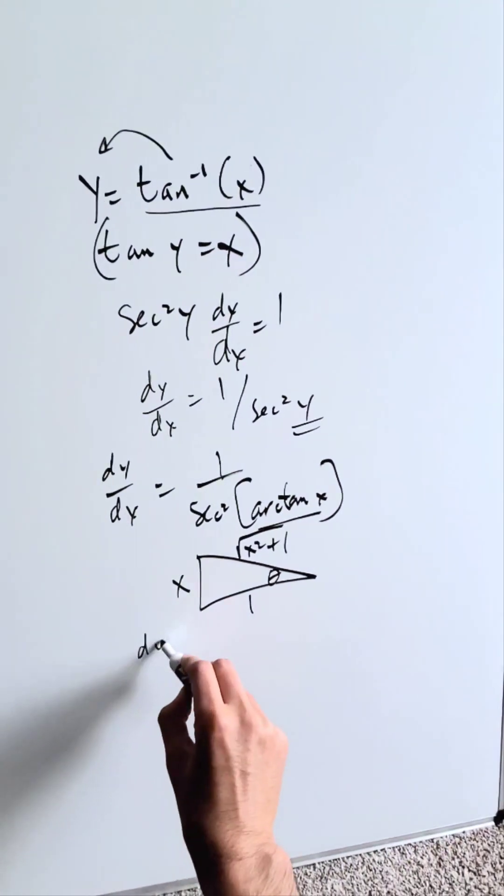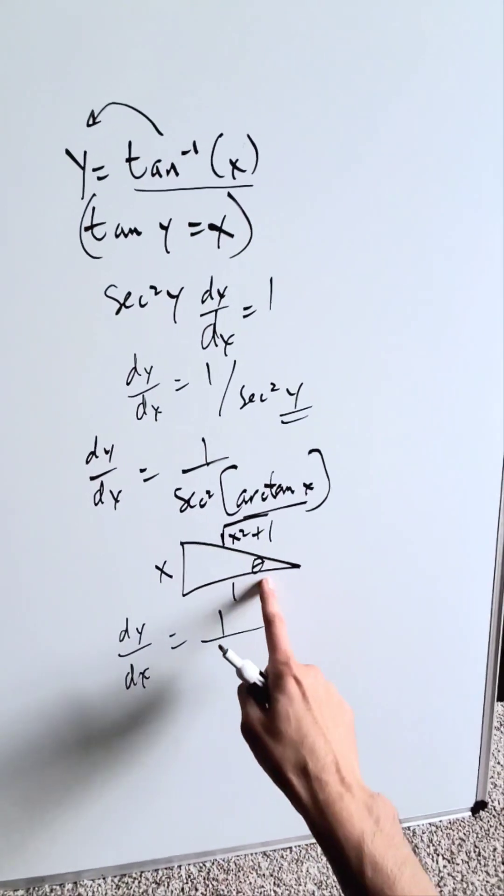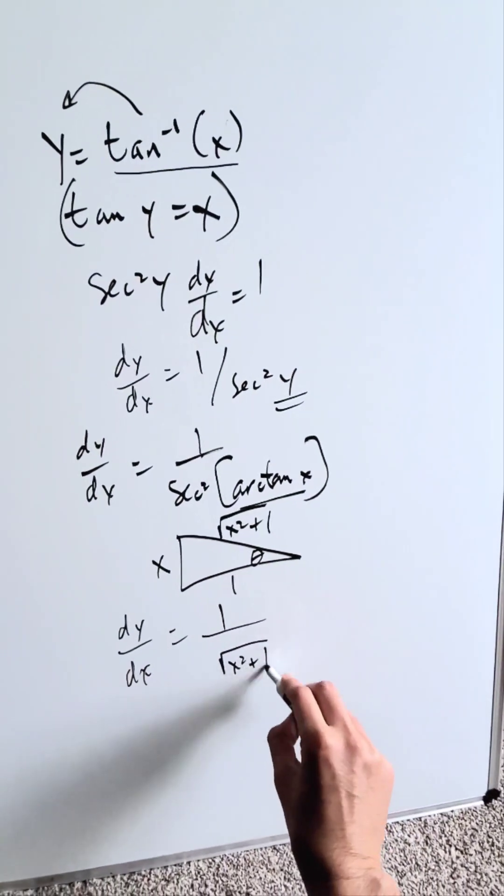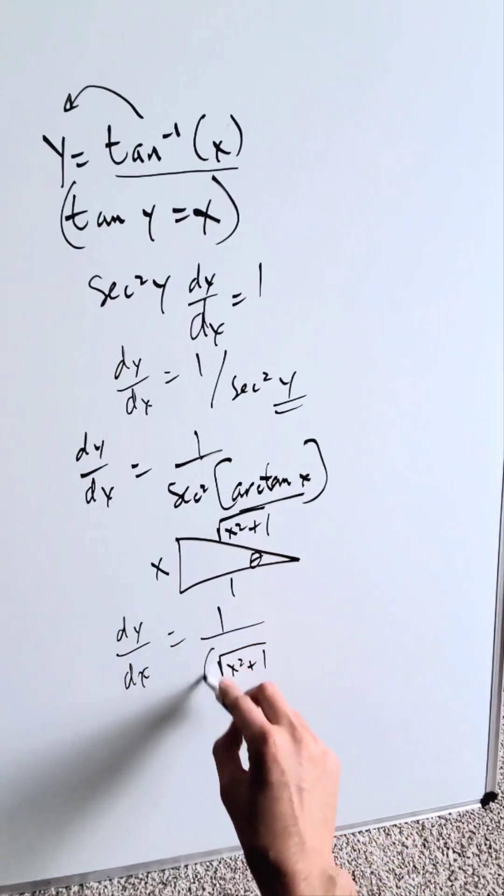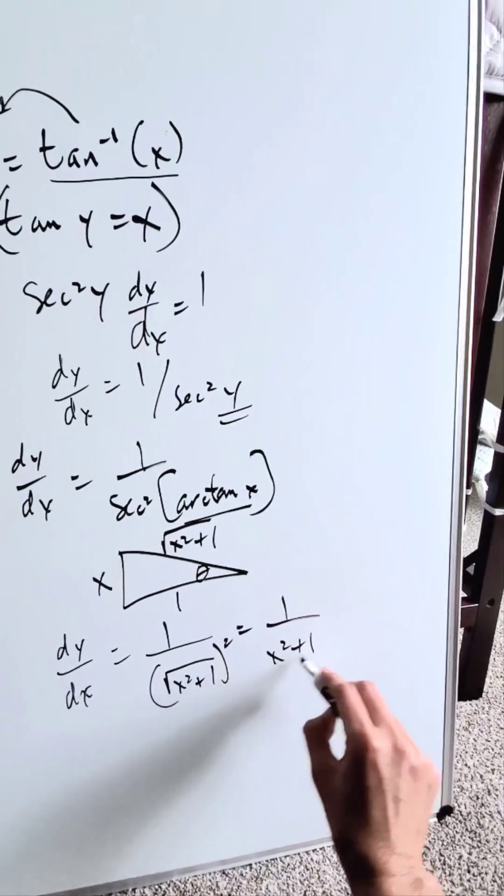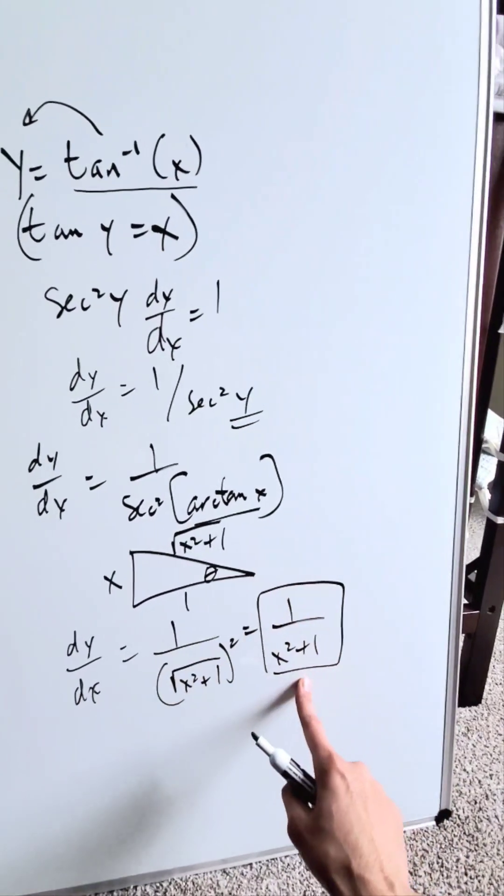Now I'm looking here: dy over dx is equal to 1 divided by secant squared of this angle, which will be root x squared plus 1, because secant is hypotenuse over adjacent. You're squaring that, you'll have here 1 over x squared plus 1, which is the derivative of inverse tan x.